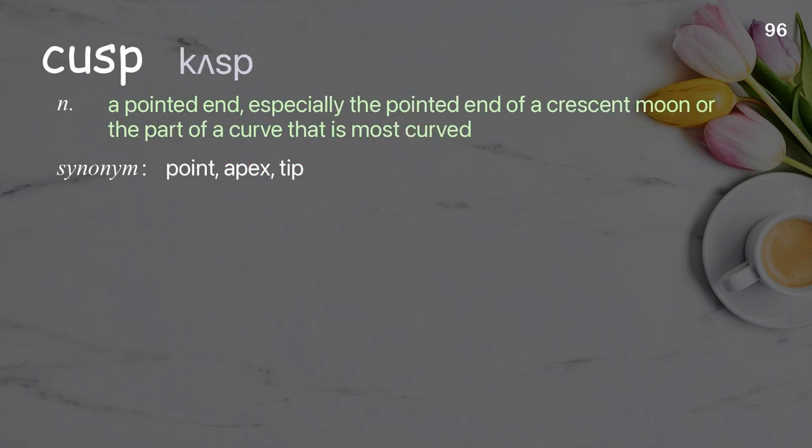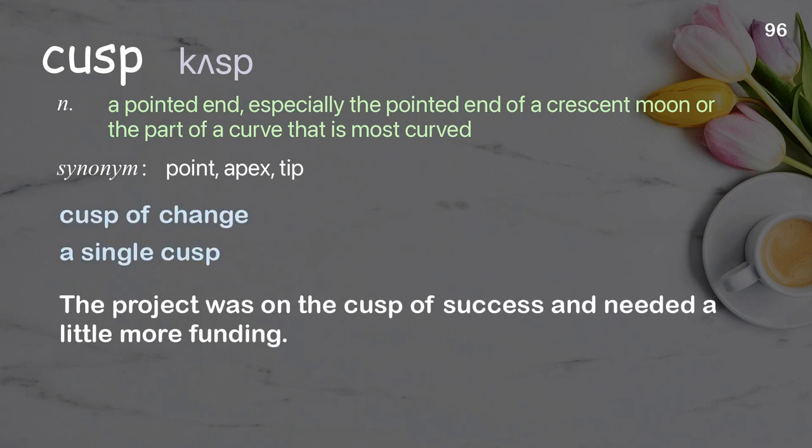Cusp: A pointed end, especially the pointed end of a crescent moon or the part of a curve that is most curved. Examples: Cusp of change. A single cusp. The project was on the cusp of success and needed a little more funding.